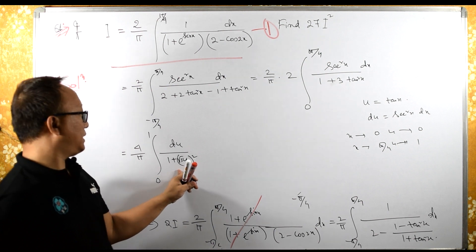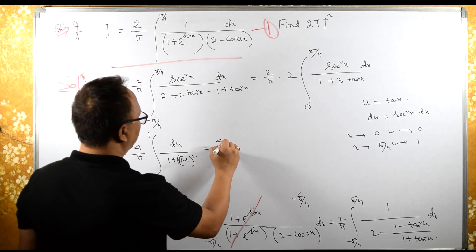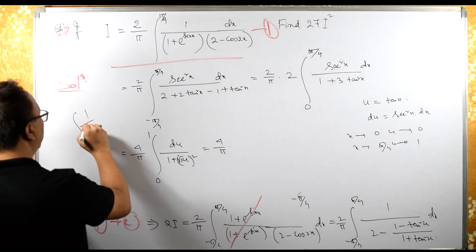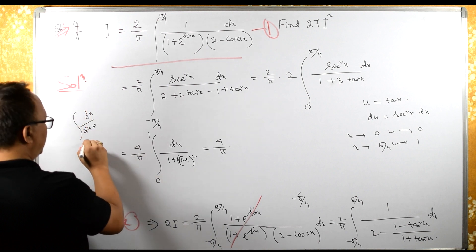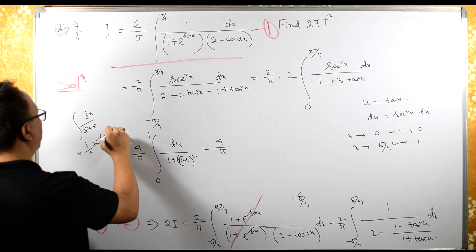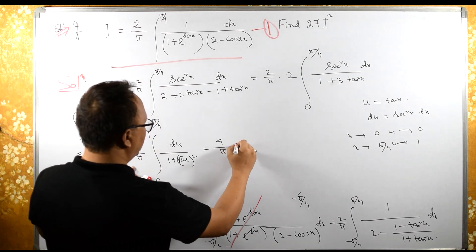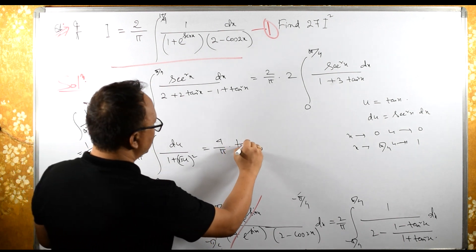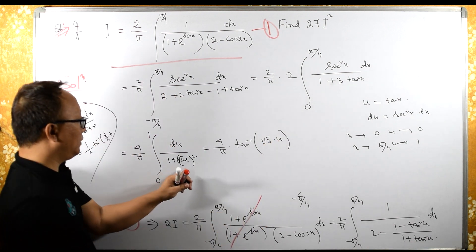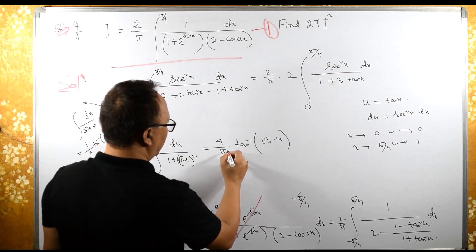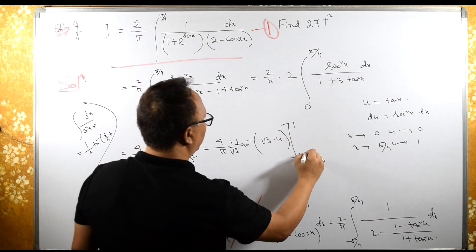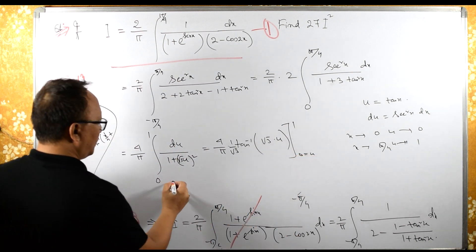We can write 3u squared as root 3 times u, the whole squared. This is of the standard form integral of 1 upon a squared plus x squared dx equals 1 by a times tan inverse x by a plus c. Applying this formula, with a equals root 3, we get 4 by pi times 1 by root 3, times tan inverse of u by root 3, evaluated from 0 to 1.